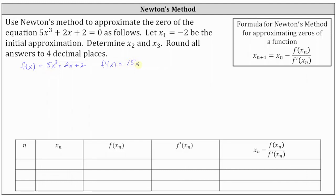In this lesson, we are going to be using Desmos to complete the table and make the approximations for x two and x three. But before we do, let's write the formulas for x two and x three. Notice for x two, n is equal to one, since one plus one is two, so x two is equal to x one minus f of x one divided by f prime of x one.